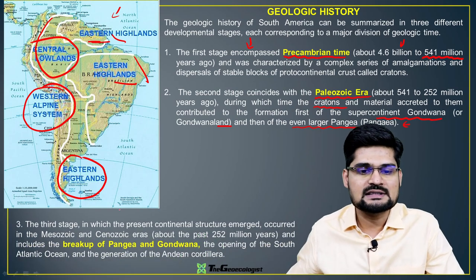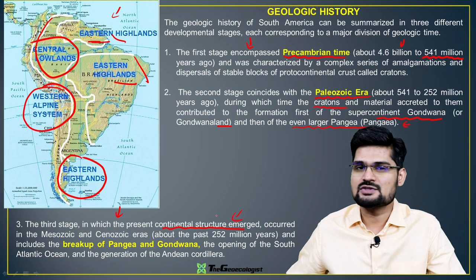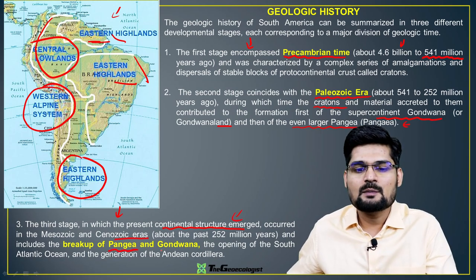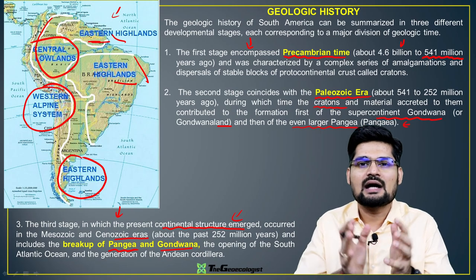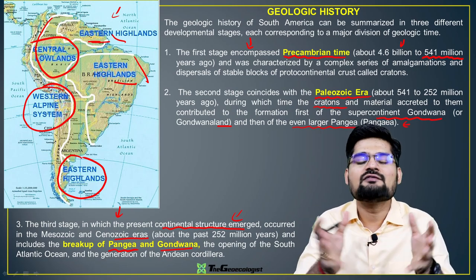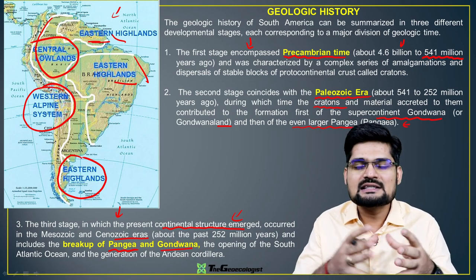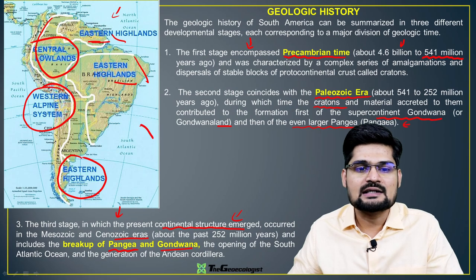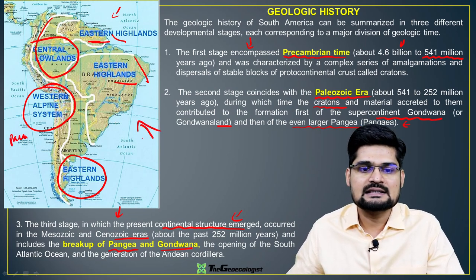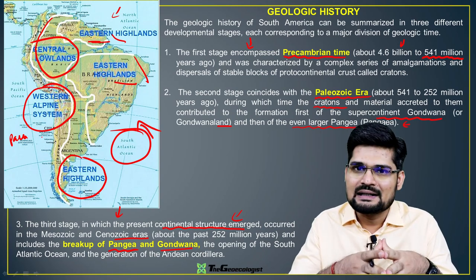In the third stage, the present continental structure emerged from the Mesozoic to Cenozoic era. Pangea broke up, Gondwana separated, and then you had the Andean formation — the formation of the Andes mountains and the adjoining Atlantic Ocean as well. This is when the present structure was formed, with the Pacific on one side and the Atlantic on the other, with this continental realm in between.